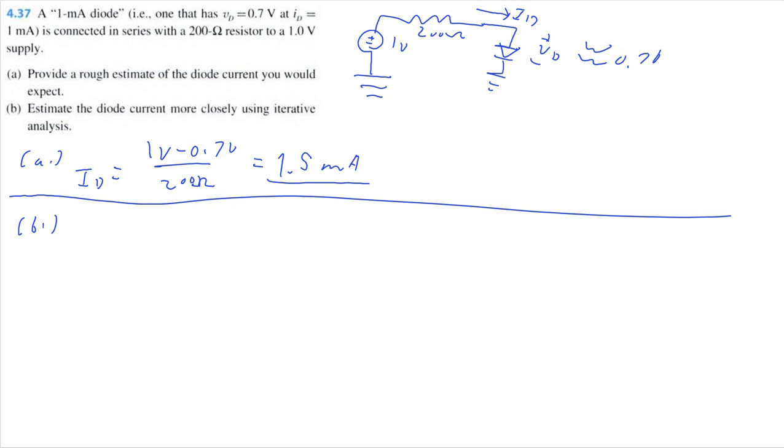Now we go to part B. Estimate the diode current more closely using iterative analysis. In a situation like this, we can use iterative analysis by solving for the current, then solving for the voltage across the diode based on that current, and then repeating this process over and over again until our numbers start to even out, they stop changing a lot, and at that point we can stop.